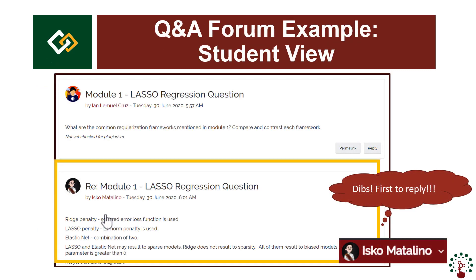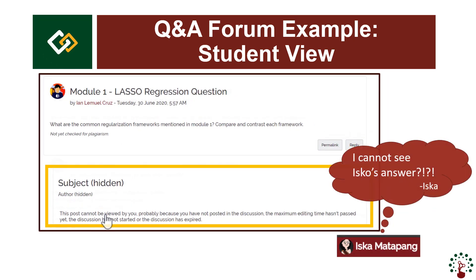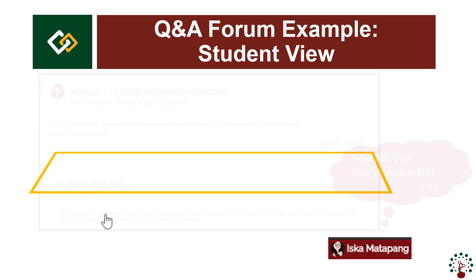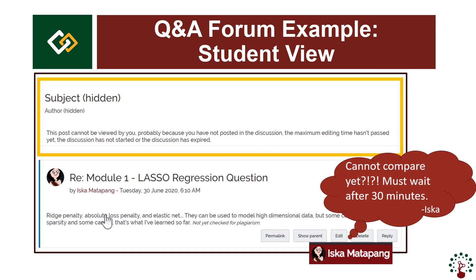Here is an example of a Q&A forum. Teacher Ian Lemuel Cruz posted a question. The first to respond is Isko Matalino. A few minutes later, his classmate Iska Matapang saw the question and is about to post her answer — she cannot see Isko's answer because she has not posted her own yet. Upon posting, a grace period starts and she still cannot see Isko's answer, but she can edit her response. After 30 minutes, Iska Matapang will be able to see her classmates' responses.